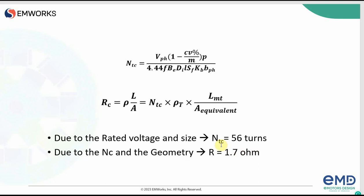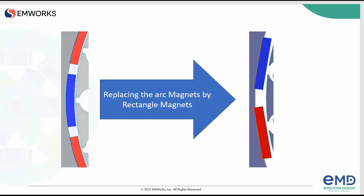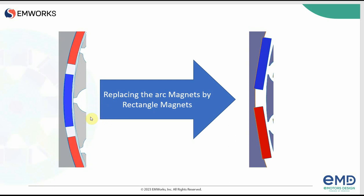As we have the rated voltage and geometry size, we can calculate the number of turns in our coils, and from that the winding resistance too. We will have a design with the calculated values and then adjust the geometry to be more cost effective. For example, instead of arc magnets, we choose rectangular magnets to be attached to the outer rotor, so we don't have to buy or mold specific arc-shaped magnets — we can use standard rectangular magnets.